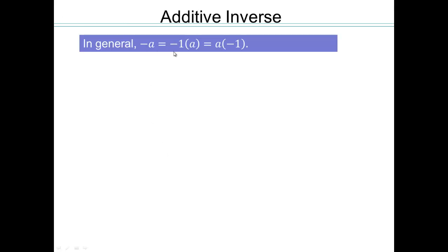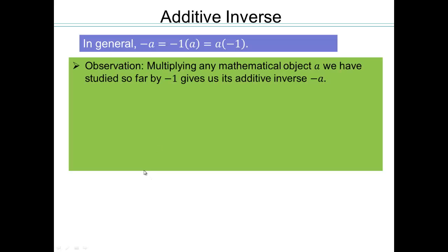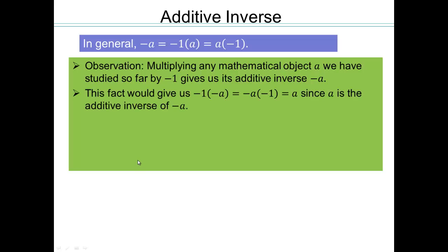In general, negative 1 times a is the additive inverse of a, which is negative a. Similarly, a times negative 1 is also the additive inverse of a, or negative a. So multiplying by negative 1 always gives us the additive inverse.